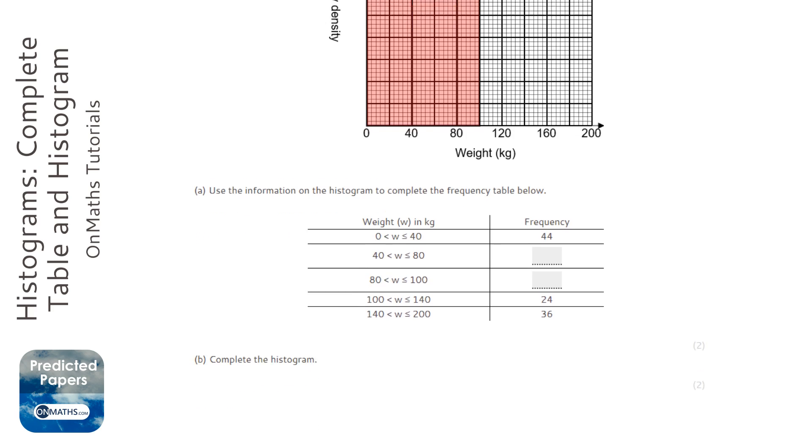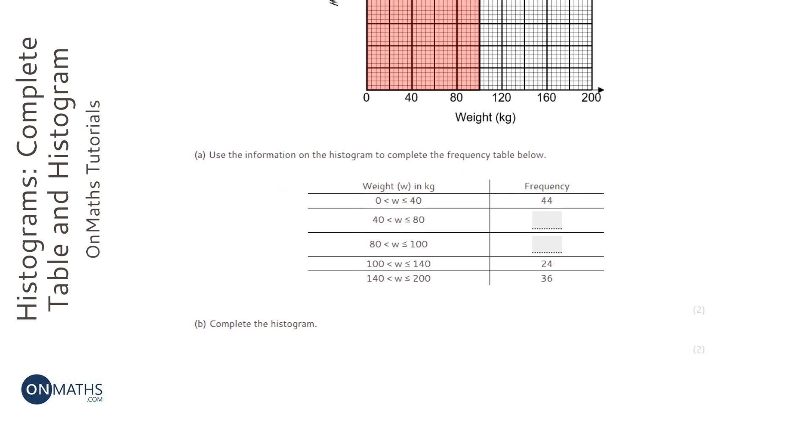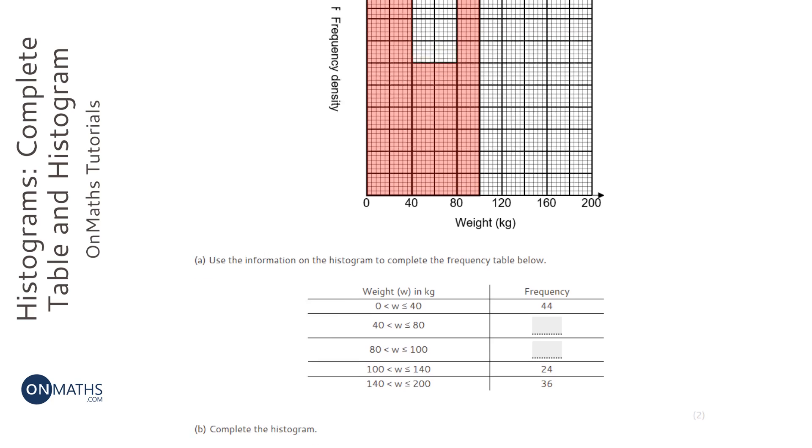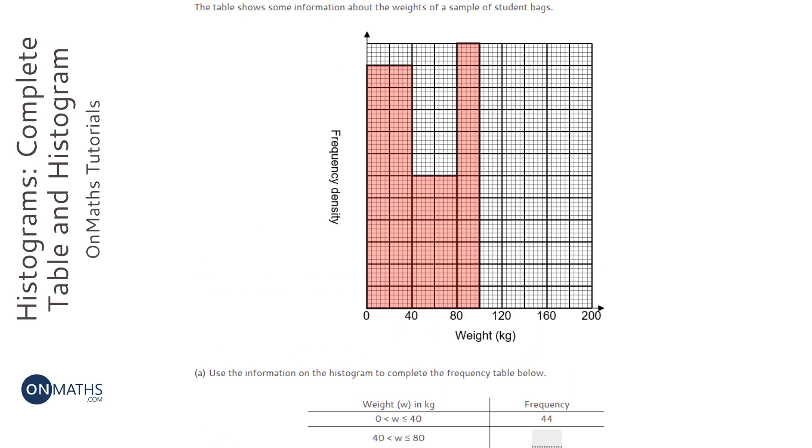There's a couple of ways of doing this question. We're asked to complete the table and then complete the histogram. You can do this by counting squares, but I'm just going to use the formula for this.